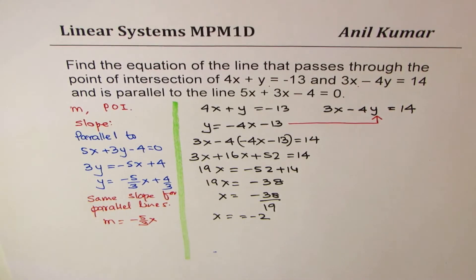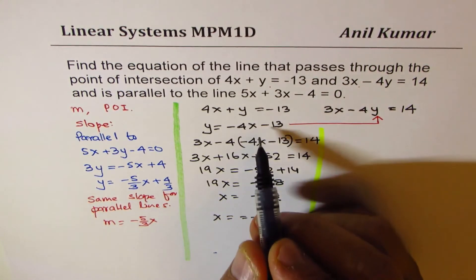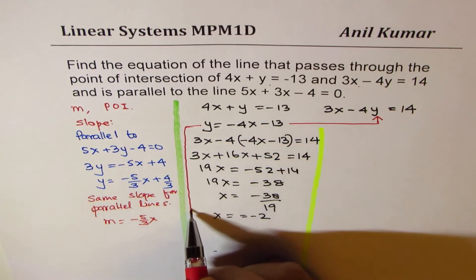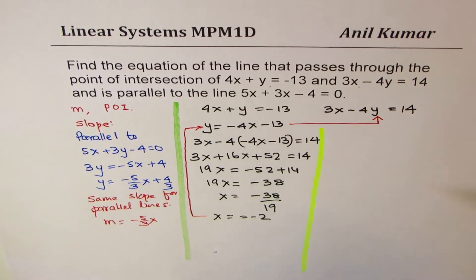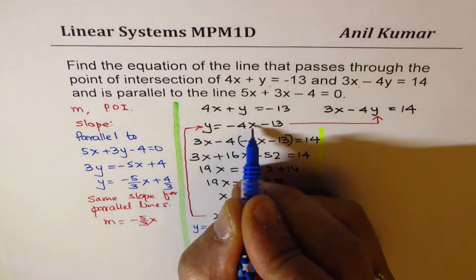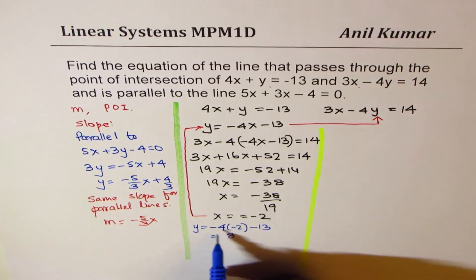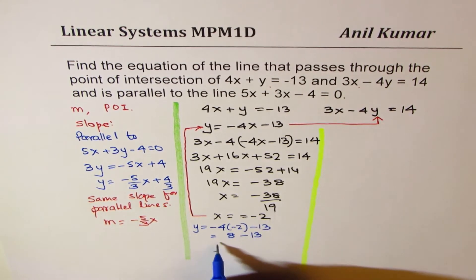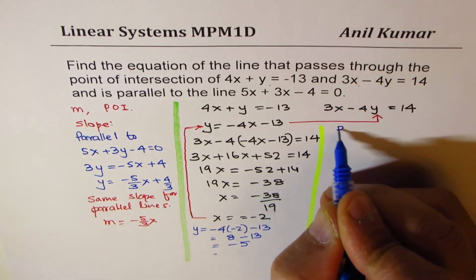To find the y value, we substitute x = -2 into our first equation. So y = -4(-2) - 13, which is +8 - 13, giving us y = -5. Therefore, the point of intersection is (-2, -5).